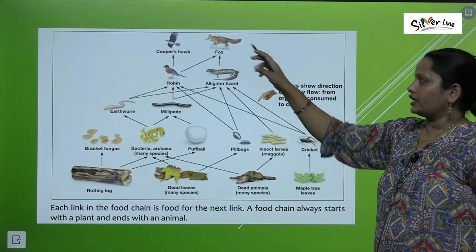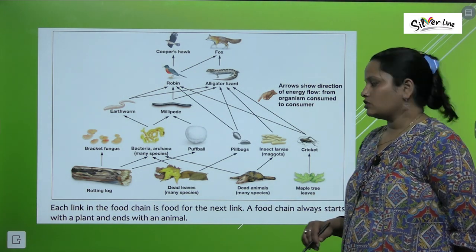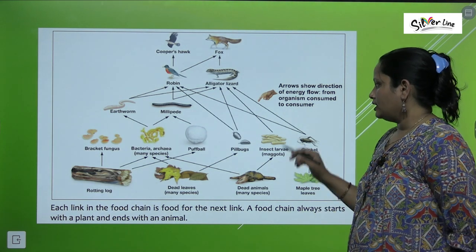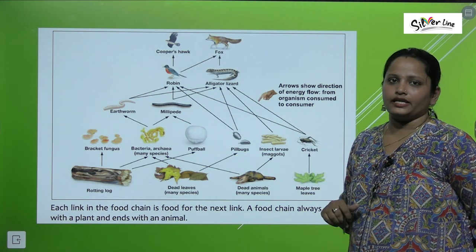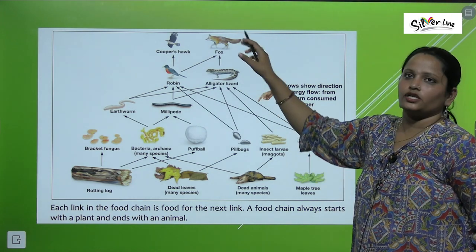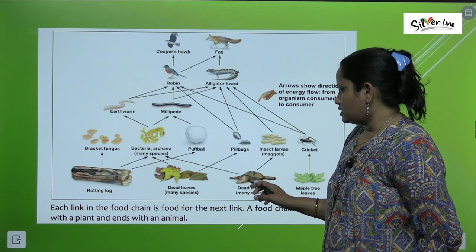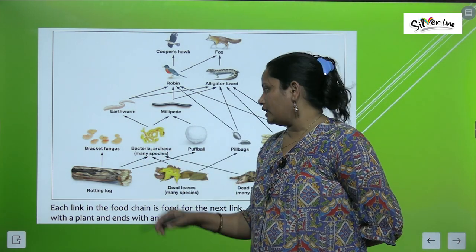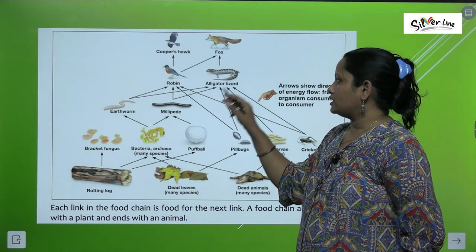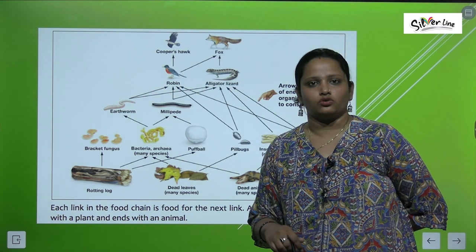So the plant is indirectly eaten by the fox. Similarly, a dead animal is eaten by insects, those insects are eaten by an alligator or lizard, and that lizard is eaten by a fox. The dead animal is also eaten by bacteria, and those bacteria are eaten by a millipede, which is again eaten by an alligator lizard. The same process continues.